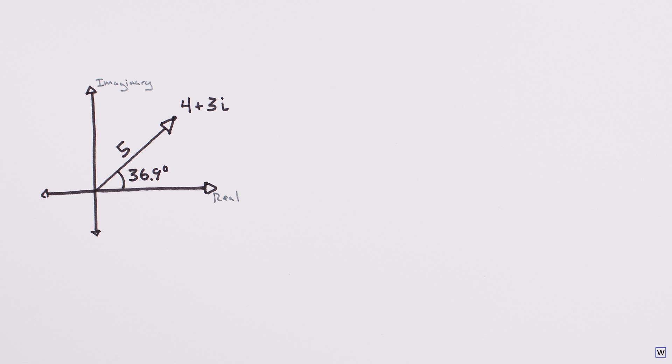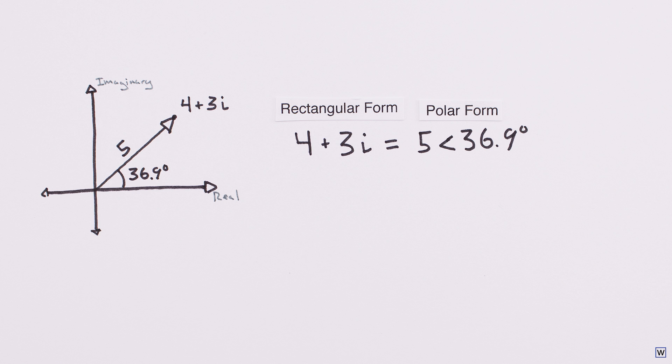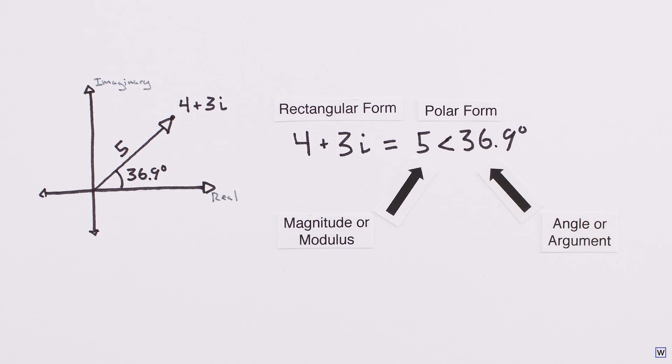Instead of writing complex numbers as the sum of their real and imaginary parts, we instead write them as their distance from the origin and the angle they make with the real axis. This is called polar form, and the distance from the origin gets a special name, magnitude.